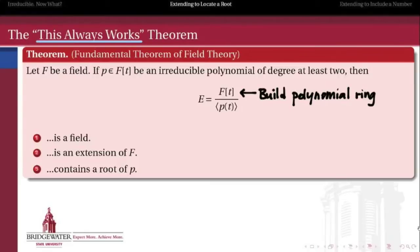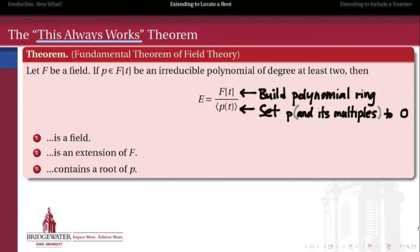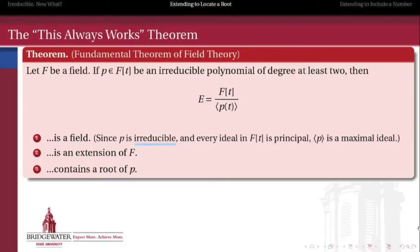So again, this is the construction where we build the polynomial ring and then take the quotient by the principal ideal generated by p, which really just means that we're setting p — and therefore all of its multiples — equal to zero in the quotient. The first important observation is that this quotient e is a field. The reason e is a field is that p is, by presumption, an irreducible polynomial. And since f adjoin t is a principal ideal domain, that means the ideal generated by p is a maximal ideal. Whenever we take the quotient of a commutative ring by one of its maximal ideals, we get a field.